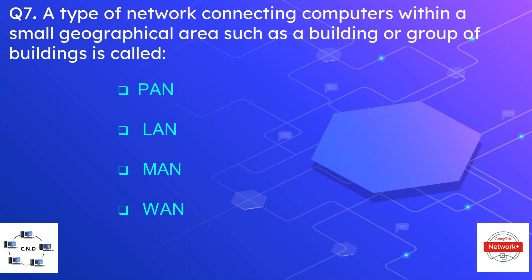Question number seven: a type of network connecting computers within a small geographical area such as a building or group of buildings is called — options are PAN (personal area network), LAN (local area network), MAN (metropolitan area network), and WAN (wide area network). The correct option is LAN, which is limited to a geographical area such as a building, home, or office.